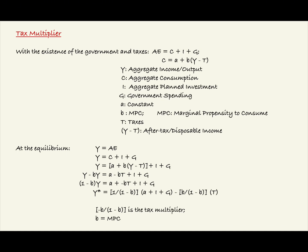At the equilibrium, we define that Y equals AE, or aggregate income or output equals planned aggregate expenditures. Since AE equals C plus I plus G, we can also say that Y equals C plus I plus G.